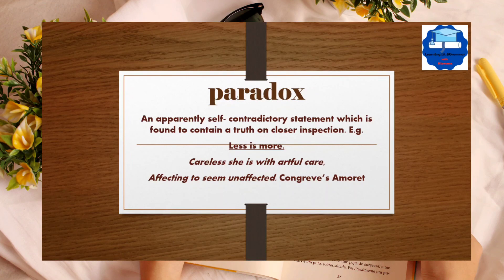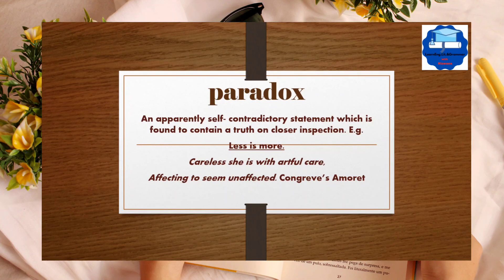An oxymoron is a combination of two words that contradict each other — it is a dramatic figure of speech. Oxymorons are often referred to as a contradiction in terms; they are just a word or two that bounce off each other. Paradoxes, however, are entire phrases, sentences, or quotes. Actually, both achieve the same result.